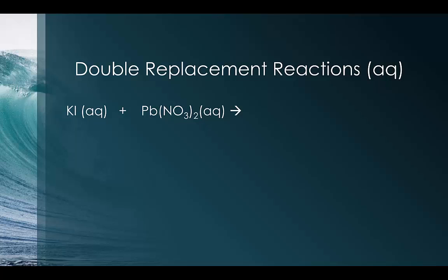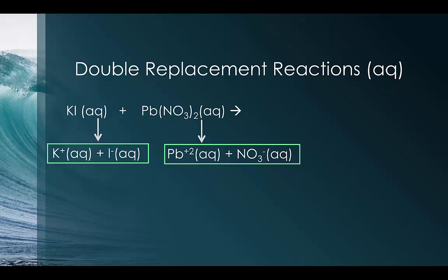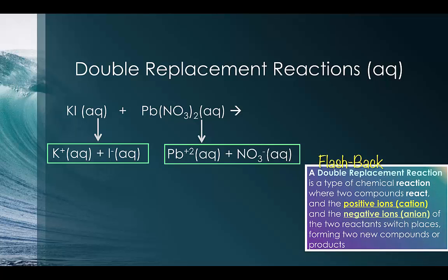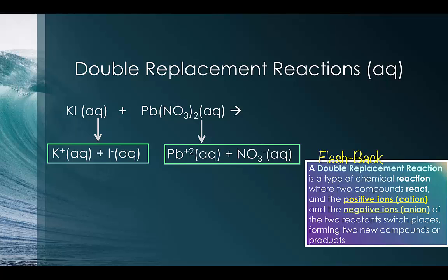So using what we just learned, let's look at this double replacement reaction. So before you can predict, we have to dissociate those ions. That's the very first thing. That means we have to make them dissolved. So if you were to dissolve potassium iodide on the far left, you should get one K-plus ion and one I-minus ion. And if you were then to dissolve lead nitrate, you should get one Pb-plus-2 ion and one NO3 with a negative one charge ion. And then when we double replace, the cations are going to switch places, and the anions are going to have a new cation partner. So in case you forgot what a double replacement reaction is, it is a type of chemical reaction where two compounds react, and the positive ions and the negative ions of the reactants switch places, forming two new compounds or products.